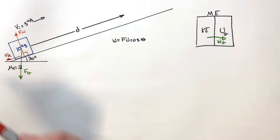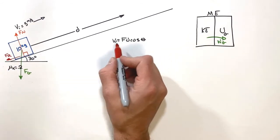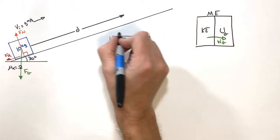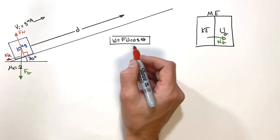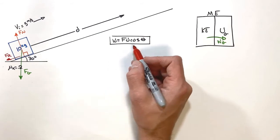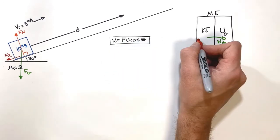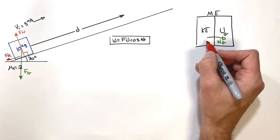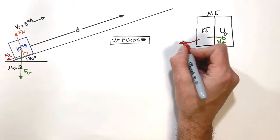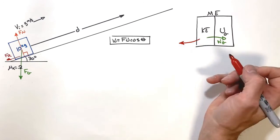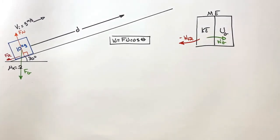Friction acts backwards on the block. Looking at our work equation, friction is acting in the opposite direction of displacement, so friction does negative work. We know it's negative because there are 180 degrees between the friction force and displacement. Friction is a non-conservative force, meaning it changes the total mechanical energy of the block — it removes kinetic energy from the block. So there is negative work done by friction, taking energy away from the block.